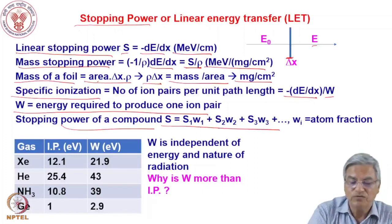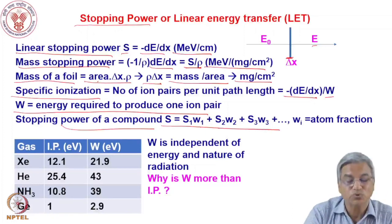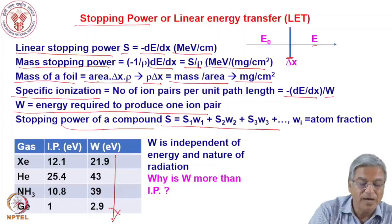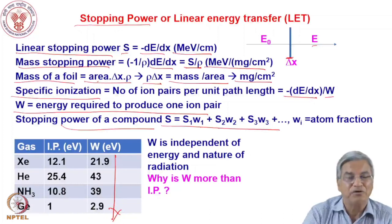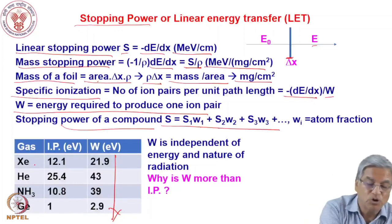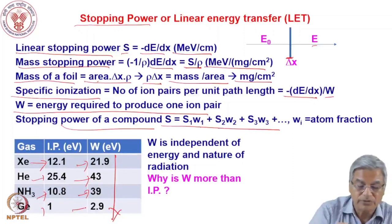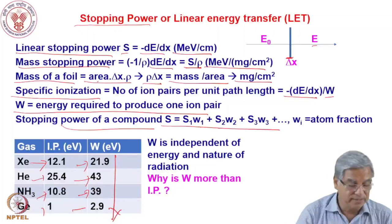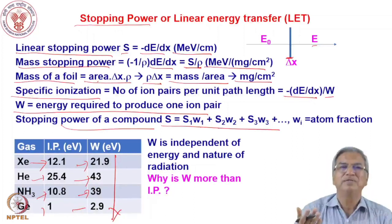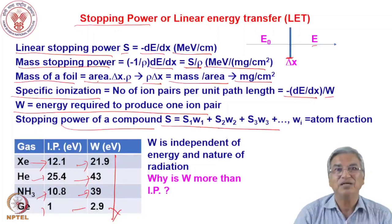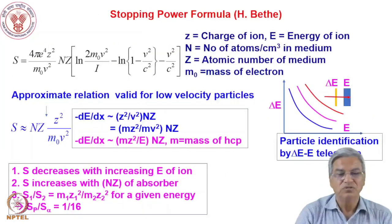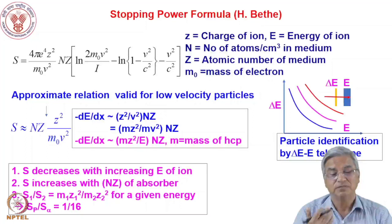The W value — energy required to produce one ion pair — is higher than the ionization potential in all media. For example, xenon has an ionization potential of 12.1 eV but W ≈ 22 eV; helium has ionization potential 25.4 eV but W ≈ 43 eV; ammonia has ionization potential 10.8 eV but W ≈ 39 eV. W values are much higher than the ionization potential because every time the charged particle interacts, it may not lead to ionization — it can lead to excitation also. The stopping power formula was derived by Bethe and Bloch in the 1930s.